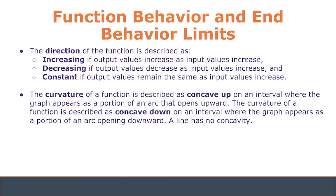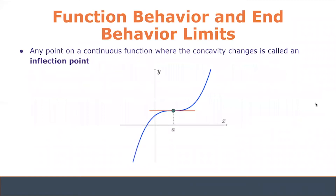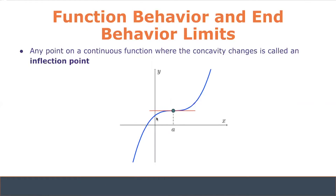In the next few slides, we'll work through examples to demonstrate and identify these behaviors. An important thing to note is that any point on a continuous function where the concavity changes is called an inflection point. This can be seen at point A on the graph in this slide. Looking at the lower left tail of the graph, the arc opens downward as it approaches point A, making it concave down. After reaching point A, it begins to open upwards towards infinity, making it concave up.